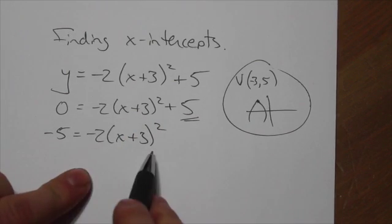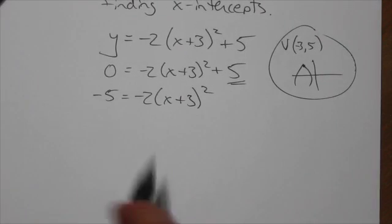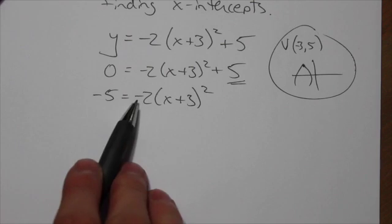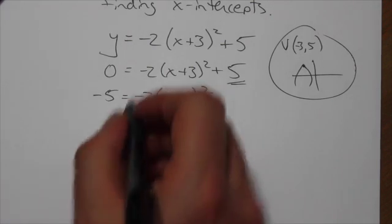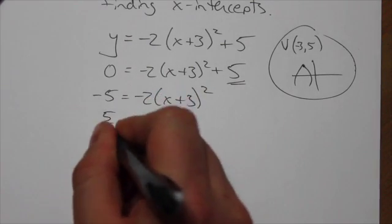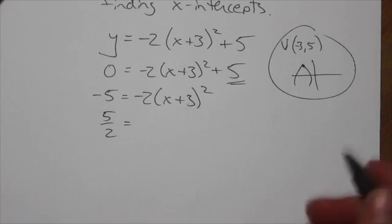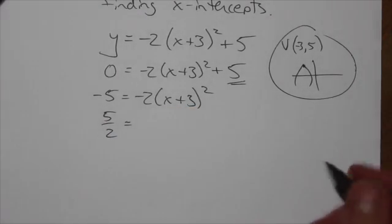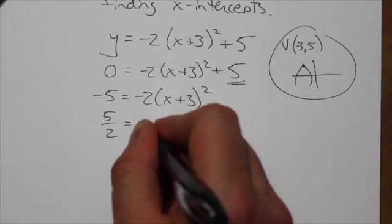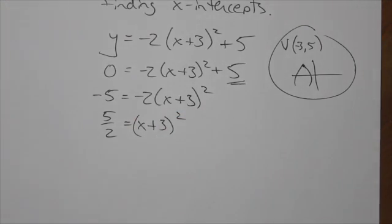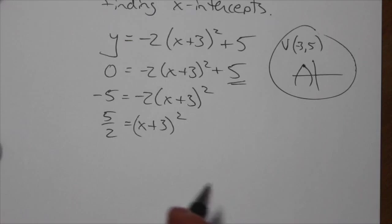Okay, now I've just got one term on the right-hand side. I'm going to divide both sides by the negative 2 because I want to get rid of the coefficient there. Now the negatives will cancel, which is good. And I'm getting a fraction. But that's okay. Just leave it like that. Don't worry about it. Don't write the decimal. Just leave it. It's fine.